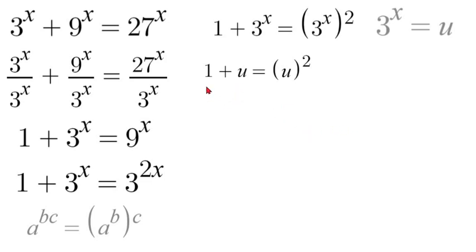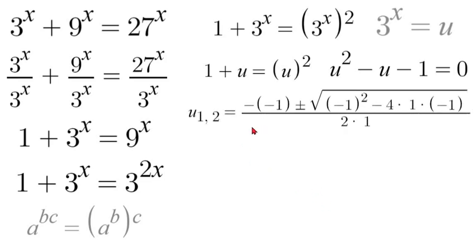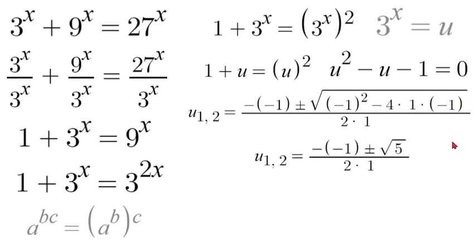Now we're going to subtract u and 1 to get this equation equal to 0, giving us u squared minus u minus 1 equals 0. We can then use the quadratic formula to solve. Plugging in, we get u equals negative of negative 1, plus or minus the square root of negative 1 squared minus 4 times 1 times negative 1, all over 2 times 1. The value under the square root simplifies to 5, so we have the square root of 5.